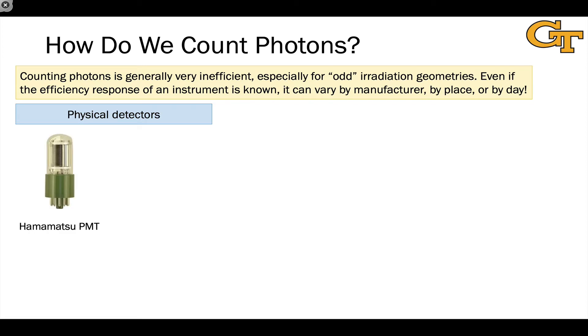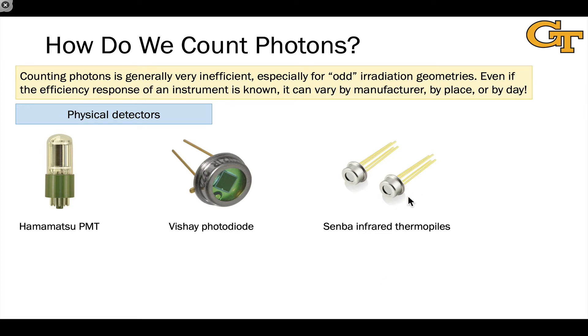A physical detector like a photomultiplier tube. These take advantage of the photoelectric effect and kick out electrons when a photon impinges on a metal plate. We can also use photodiodes, which work on a principle of allowing current flow through a semiconductor layer when a photon impinges on the sample, and thermopiles can be used to measure infrared photon flux.